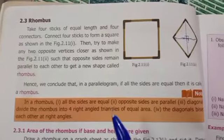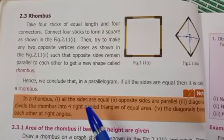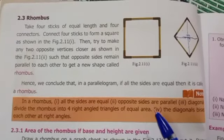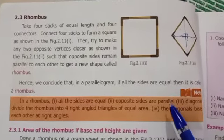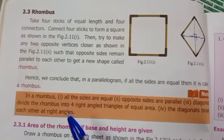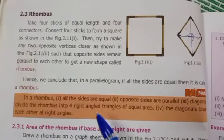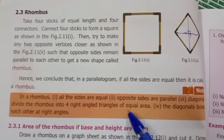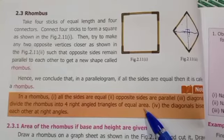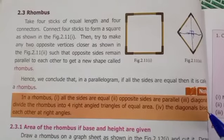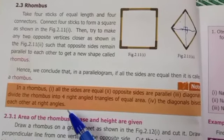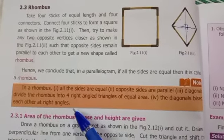So what are the properties of rhombus? All the sides are equal. Opposite sides are parallel. Diagonals divide the rhombus into four right-angled triangles of equal area. The diagonals bisect each other at right angles.